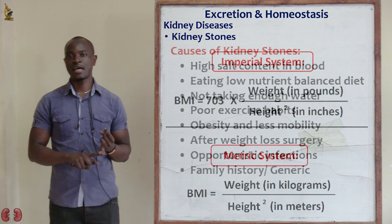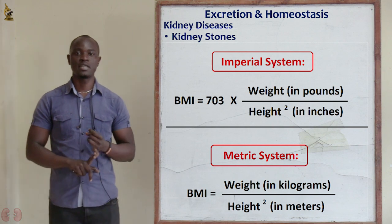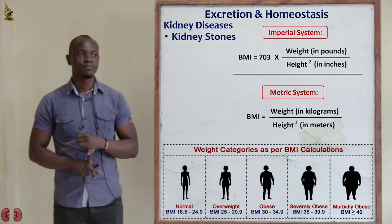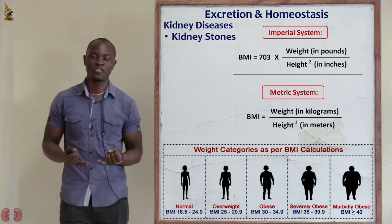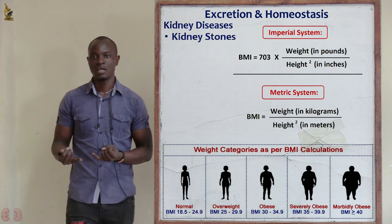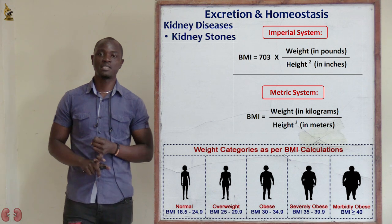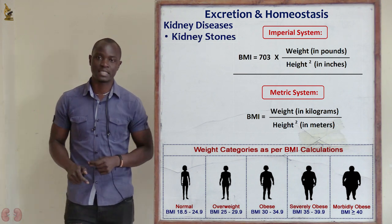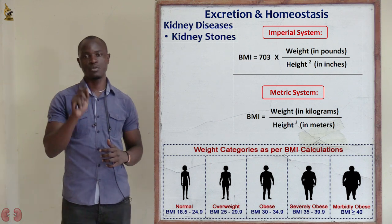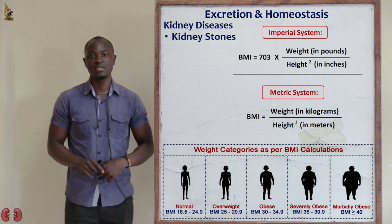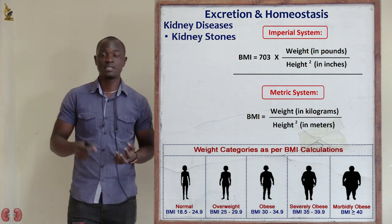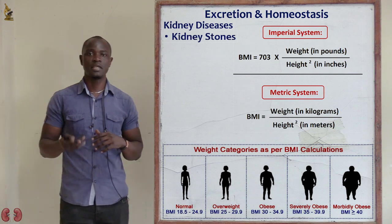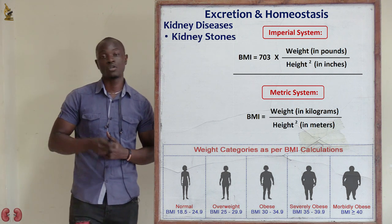A person who is obese risks high blood pressure, gout, kidney failure, heart failure, and stroke due to arteriosclerosis. Obesity also means a high risk of getting kidney stones. If you know your BMI is going towards obese, please try to do something and lose weight, because obesity leads to more harm than good.